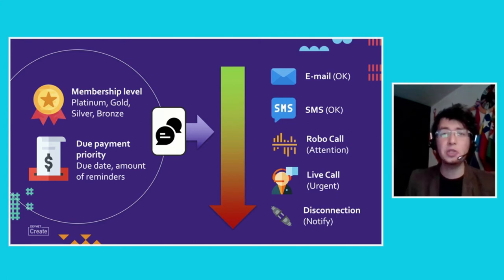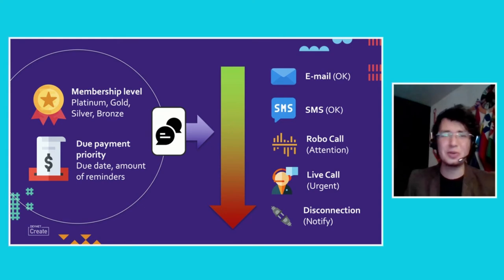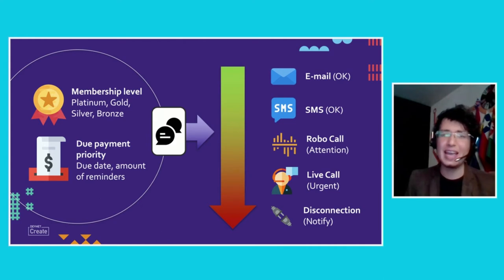The live agent would try to negotiate with the customer about the best way for them to pay their services. The last resort would be an eventual disconnection, and the customer would be notified by email and SMS inviting them to reach out and resolve their situation.